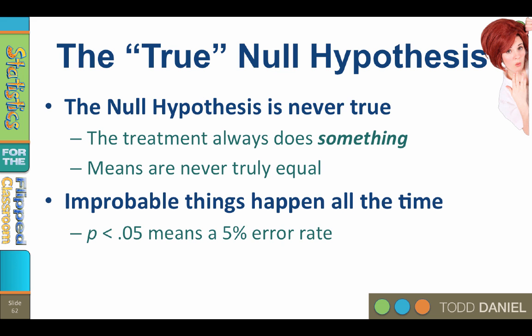Furthermore, improbable things happen all the time. In fact, if you do enough tests with the same ineffective treatment, some of those means will in fact be statistically significantly different. p less than 0.05 means that five times out of 100, one time out of 20, we will make a mistake. We will mistakenly identify an effect as significant, when in reality, it's not. We make a type 1 error.